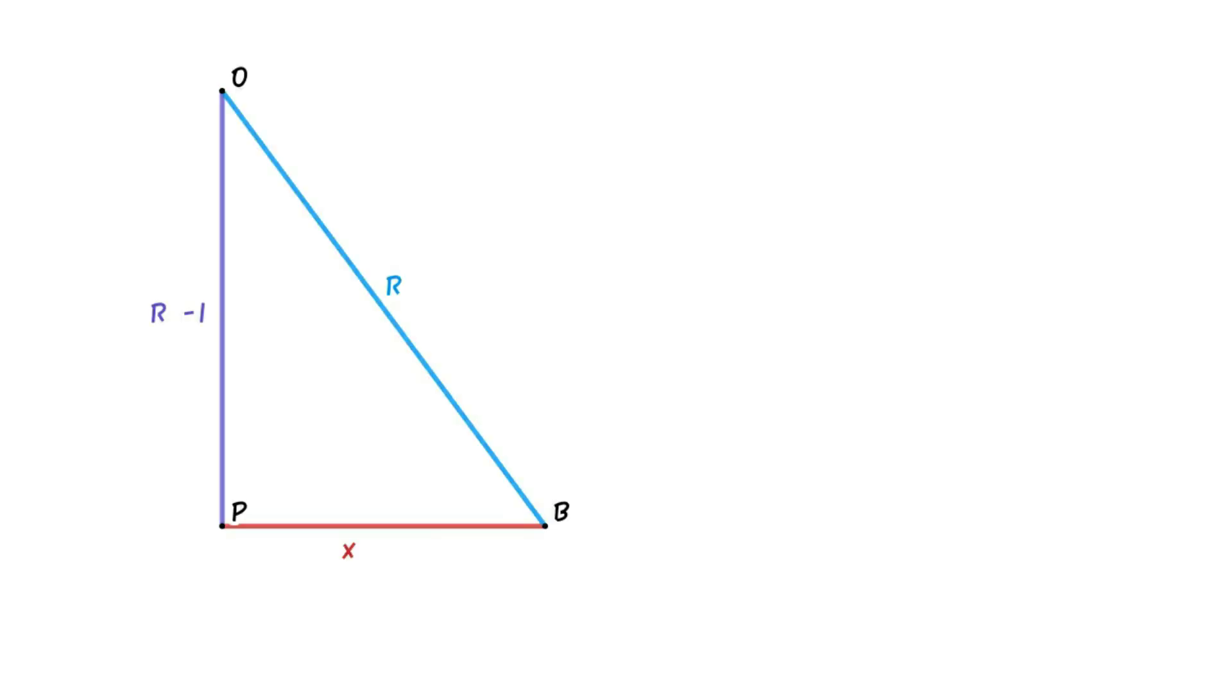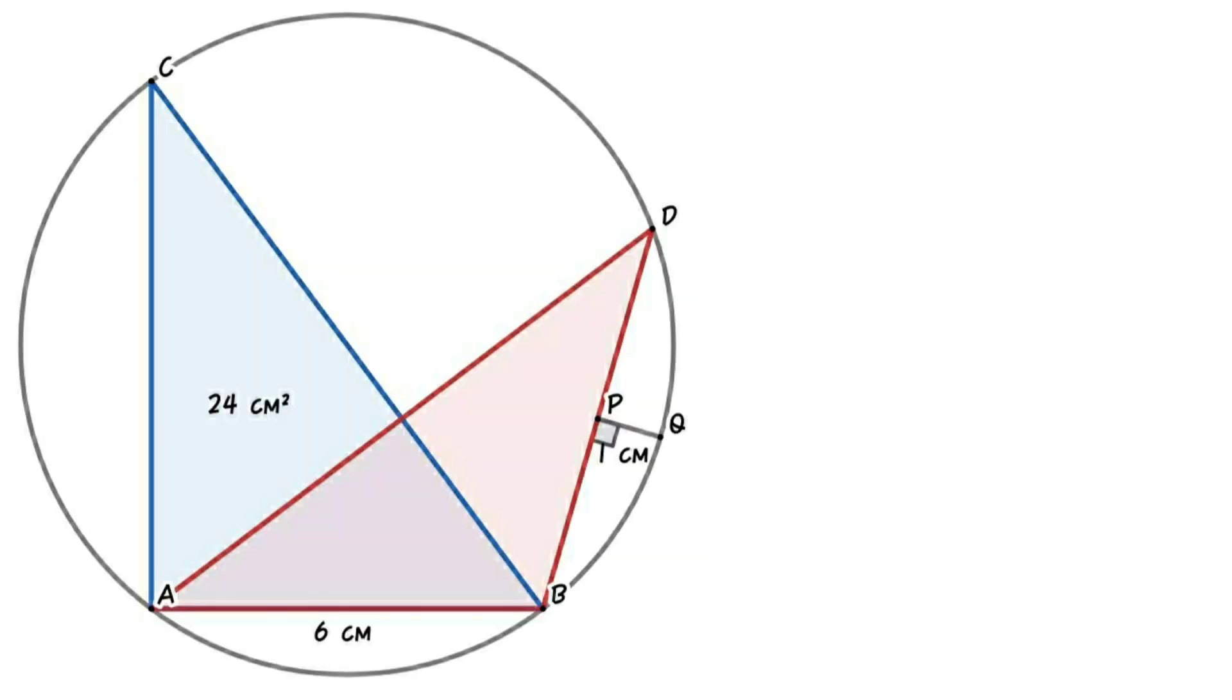Apply Pythagorean theorem in triangle POB. X squared equals R squared minus (R minus 1) squared. That is, X squared equals 5 squared minus 4 squared. So X squared equals 25 minus 16, X squared equals 9. That is, X equals 3. We know that PB equals PD, so PD equals 3. That is, BD equals PB plus PD, or BD equals 6.